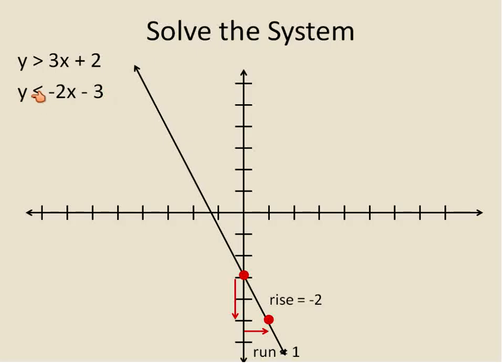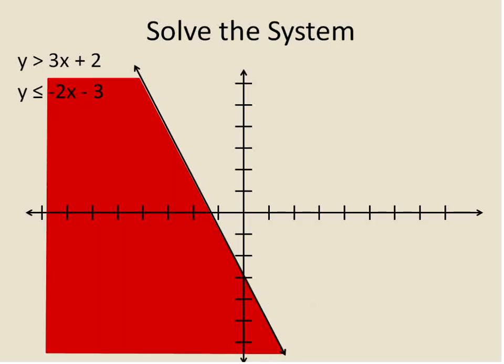Now to make this into the graph of that linear inequality, we have to highlight everything that is less than. Remember, y is less than or equal to that line. So because it's less than or equal to, the line will remain solid and we'll highlight everything below the line. So there's the solution for our second inequality. I've drawn it in red.